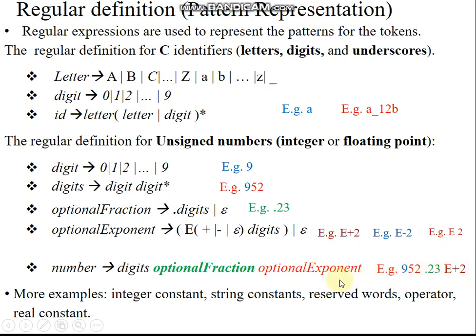If it is only an integer like 952, only the digits production is used. If it is 952.23, only digits and optional fraction are used — the exponent part is not needed. Numbers are thus represented using regular expressions. We can similarly represent integer constants, string constants, reserved words, operators, and real constants using different patterns.